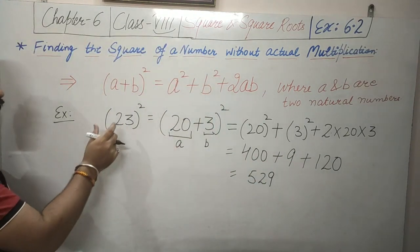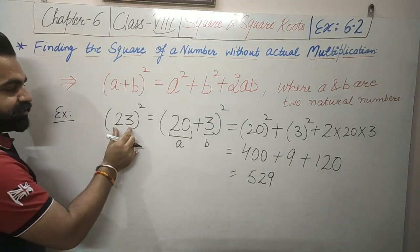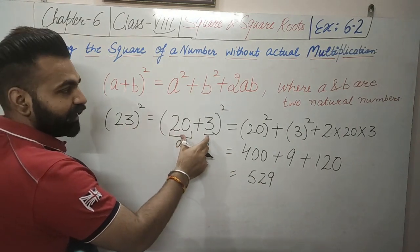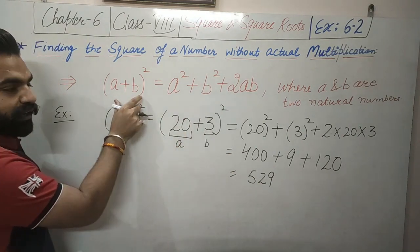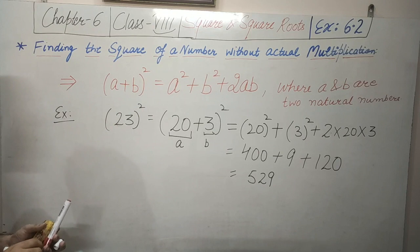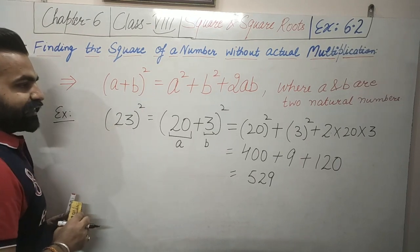So without actual multiplication, we split 23 into 20 plus 3 and used this formula to calculate the square of this number.